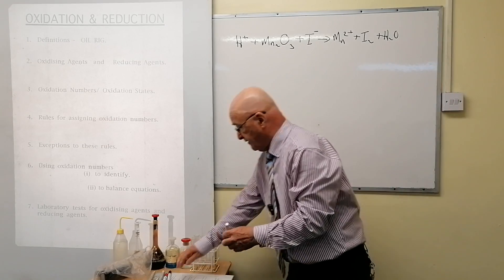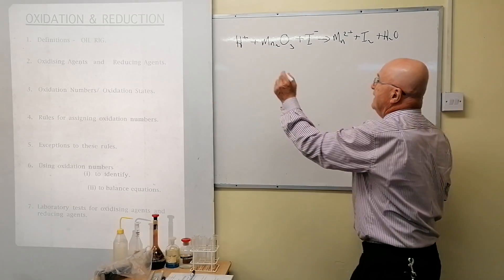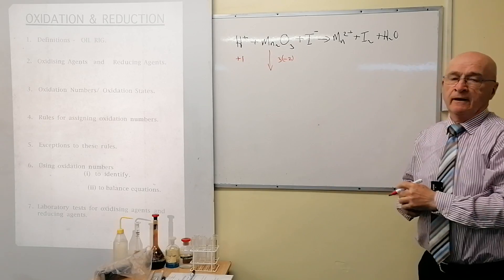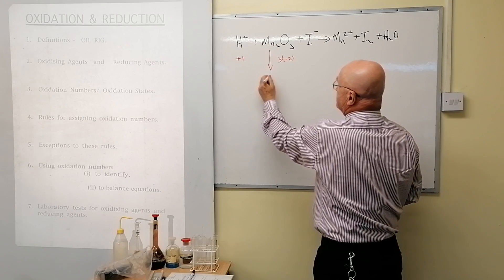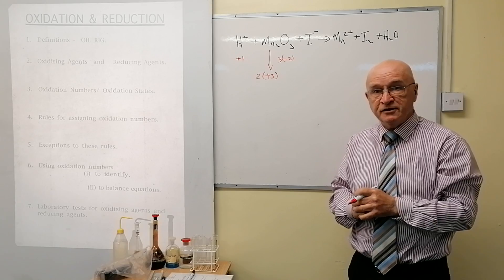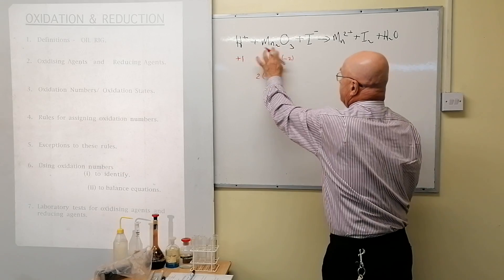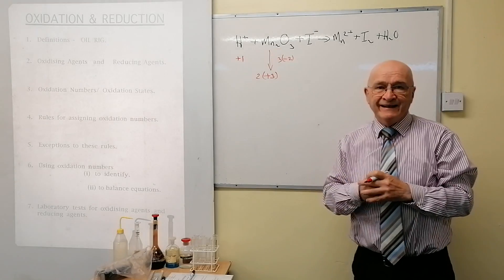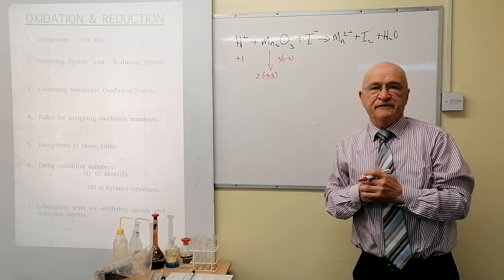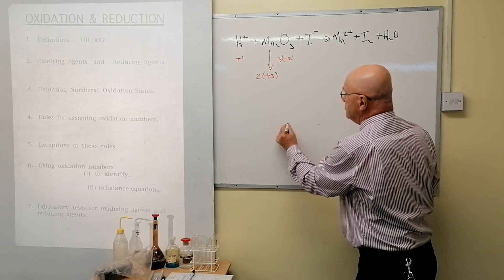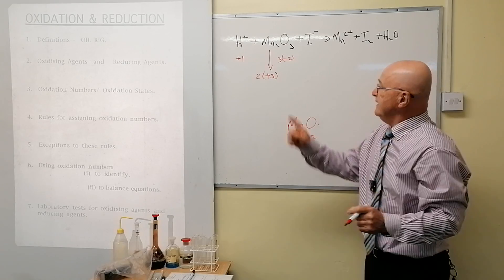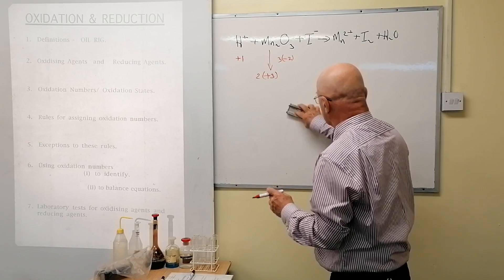Watch me go to work on this now. It's nice to write the numbers in a different color. H⁺ is a simple ion — it's plus one. Oxygen is minus two, three times, so manganese must be plus three each in Mn₂O₃. Remember, you must have a sign for every oxidation number except zero. That compound is manganese three oxide — because the oxidation number is three. If it were manganese two oxide, the oxidation number would be plus two.